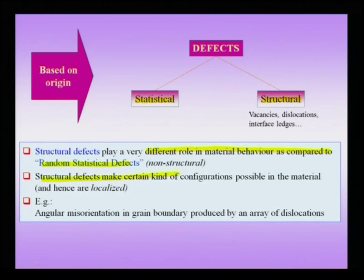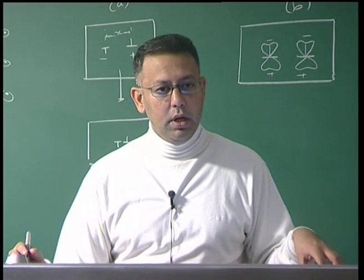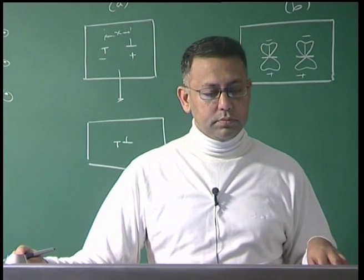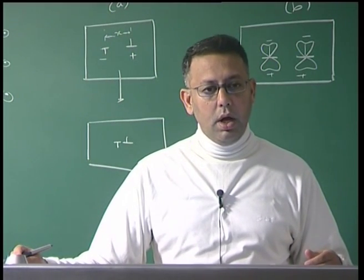Structural defects typically make certain configurations possible in a crystalline material and are localized to a certain region. For instance, the angular misorientation at a grain boundary can be produced by an array of dislocations. Dislocations present along a low-angle grain boundary — making possible the low-angle misorientation between two crystal regions — are what can be thought of as a structural array of dislocations.